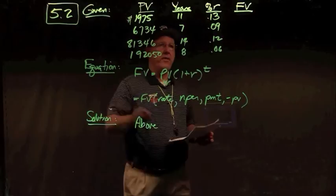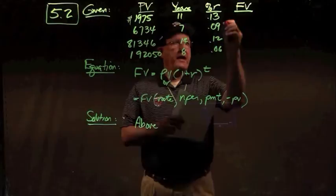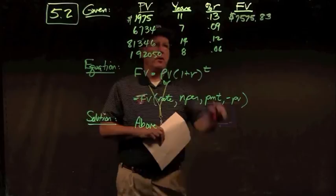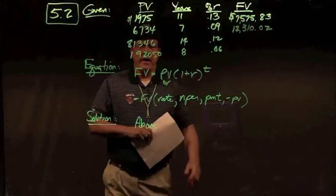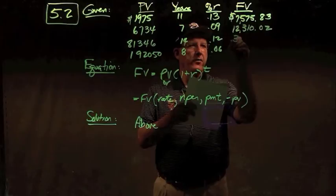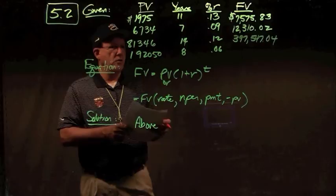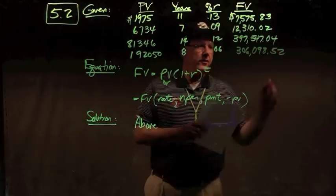Working through the calculations: $1,975 times 1.13 to the 11th power gives $7,575.83. $6,734 times 1.09 to the 7th power gives $12,310.02. $81,346 times 1.12 to the 14th power gives $397,547.04. And $192,050 times 1.06 to the 8th power gives $306,098.52. Those are your answers to problem 5.2.